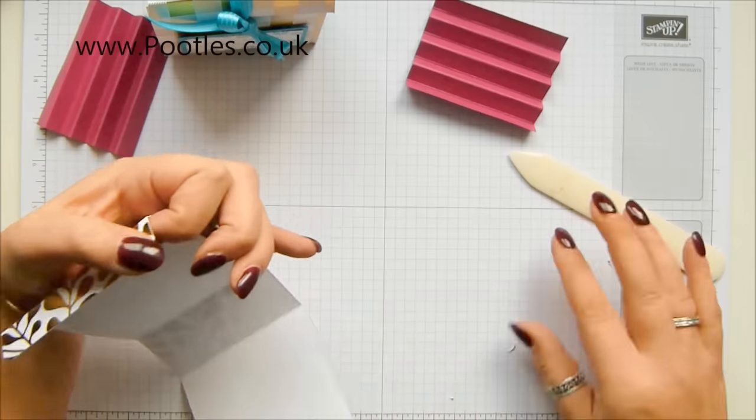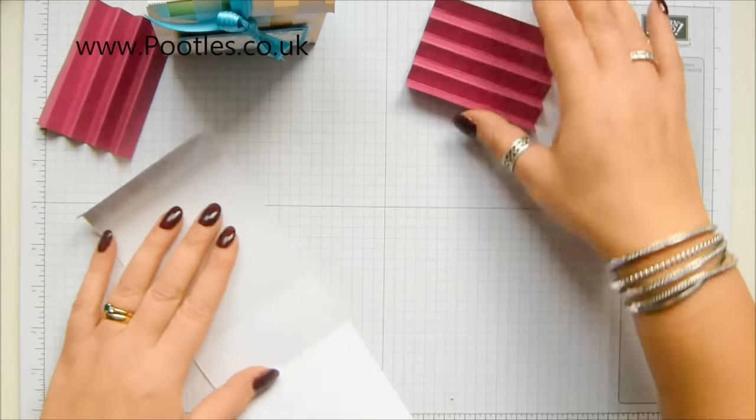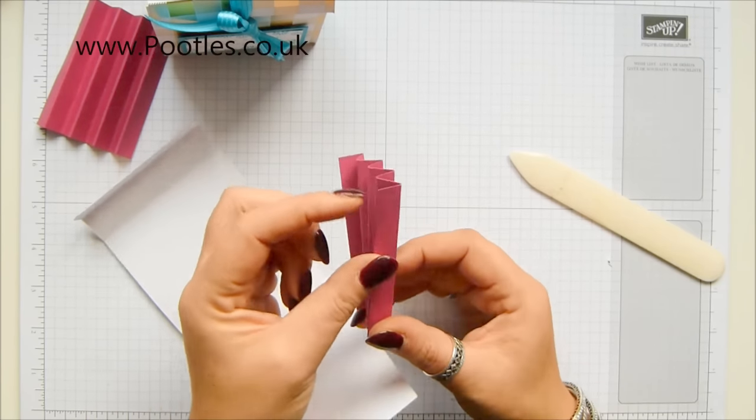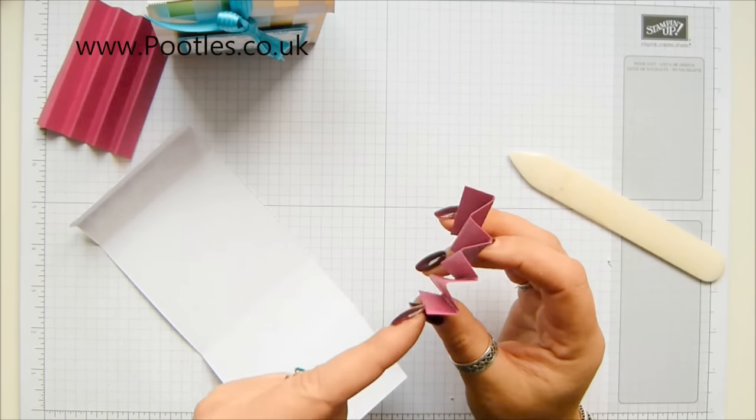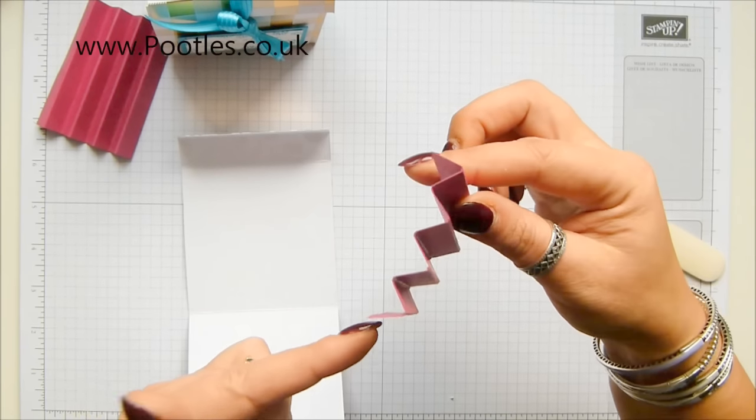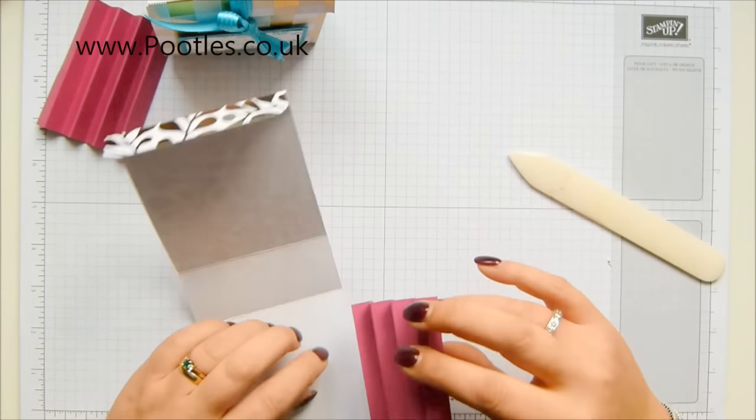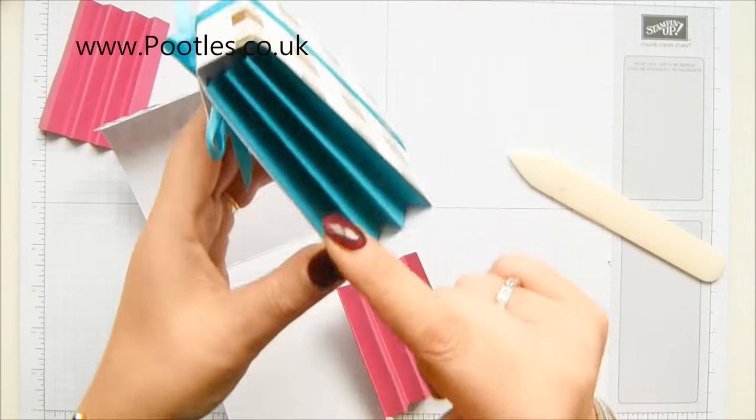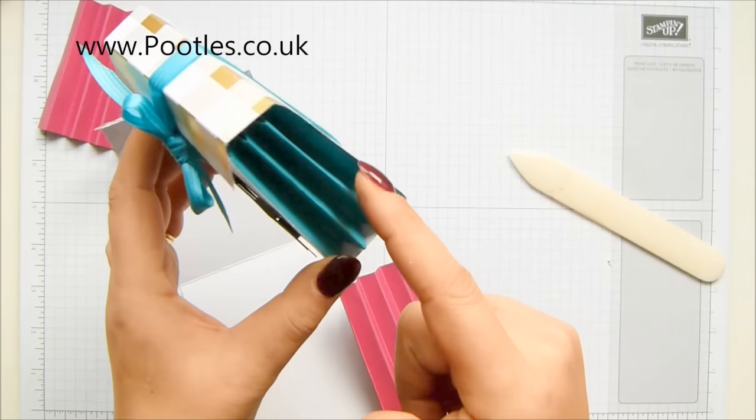This is going to concertina. The way I like to do it, I like to have this loose edge on the inside, so you glue it there and then that one will glue and you get the nice edge, if that makes sense.